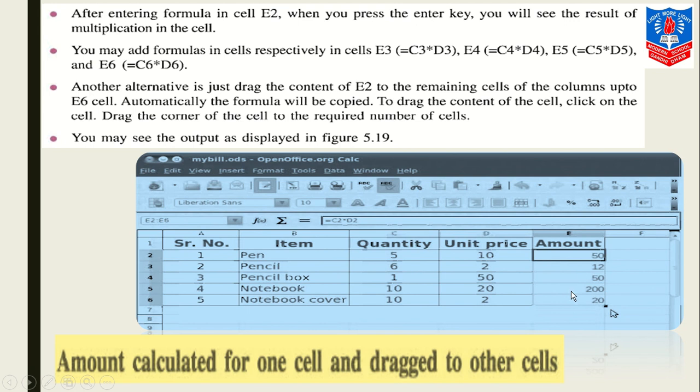After entering the formula in cell E2, when you press the Enter key, you will see the result of multiplication in the cell. Here we got the result of every item. Now you may add formulas in cells respectively. Another alternative is just drag the content of E2 to the remaining cells of the column up to E6. This small check box, this check option, will be here when you select the cell and drag the formula by dragging it down, like fill series. This will apply the same formula and change the cell addresses: C3 into D3, C4 into D4, C5 into D5.